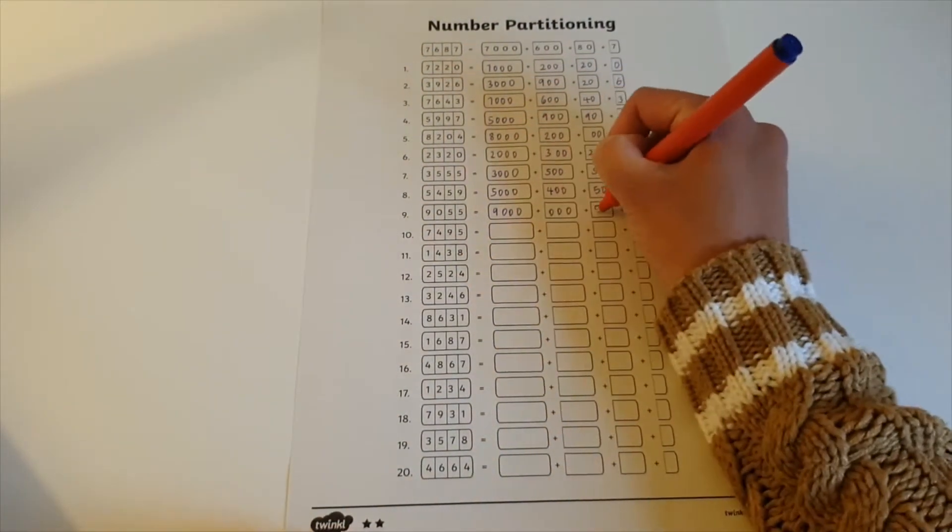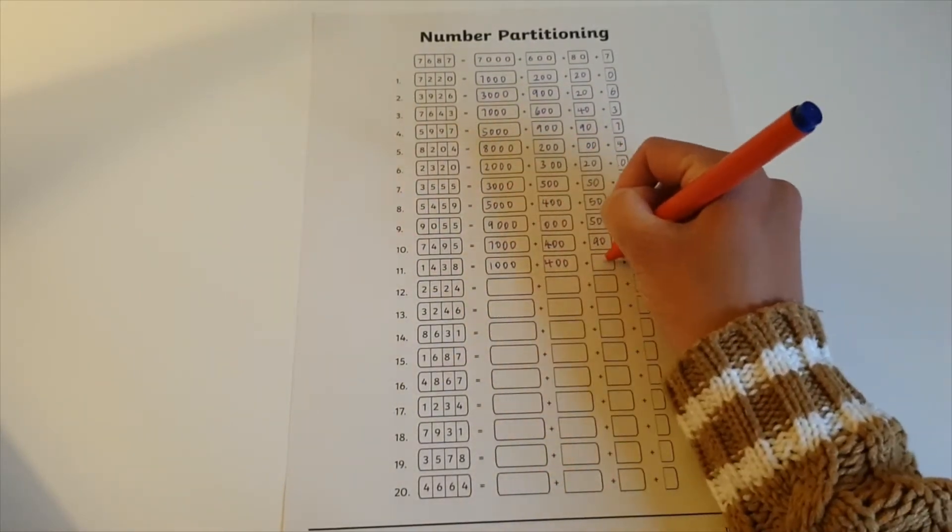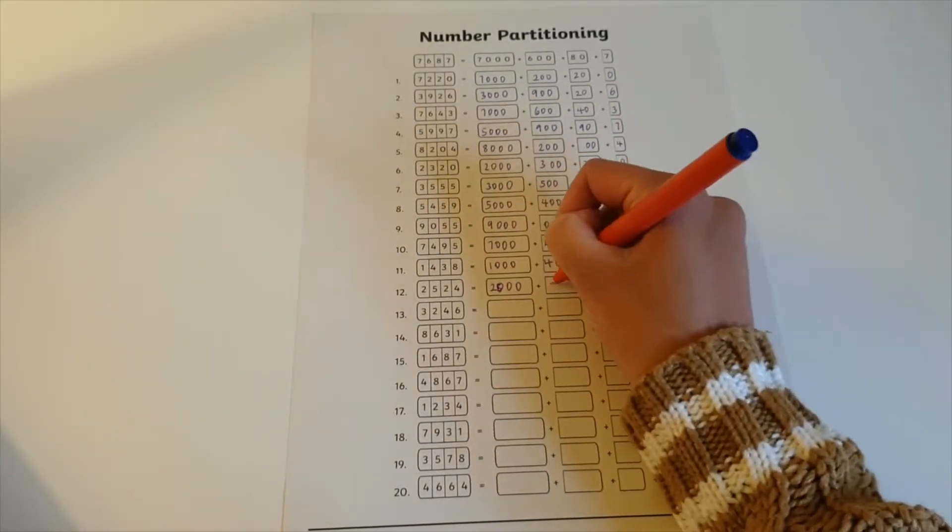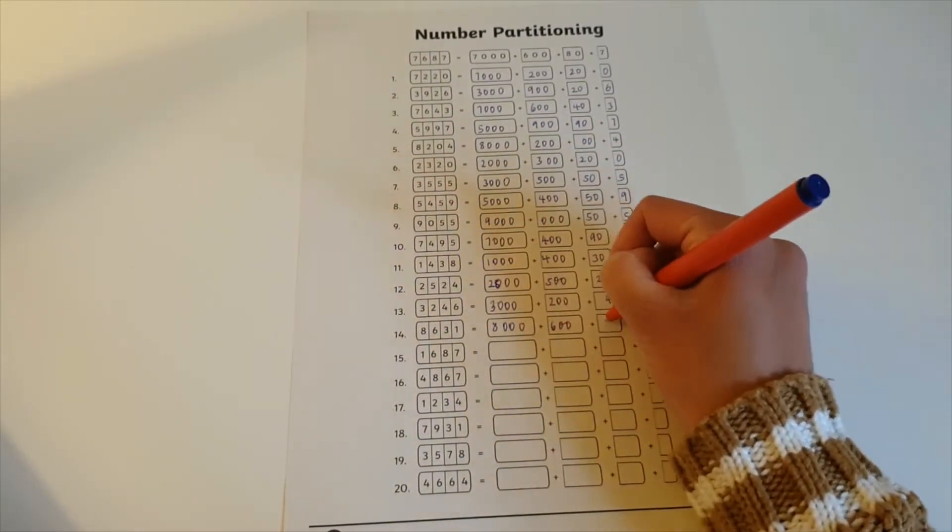Children need to read each number and partition it accordingly. So for example, 7220 can be separated into 7000, 200, 20, and 0.